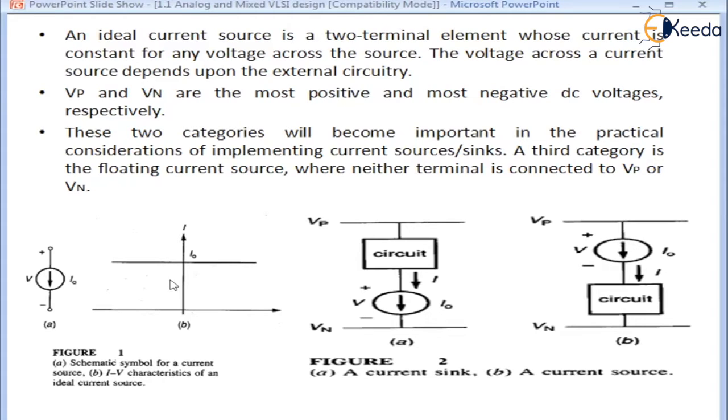It is shown in the diagram here in figure B that this is the current source which has a constant current I0 for any voltage across this source, and the ideal characteristic of a current source shows that for any voltage there is a constant current I0.